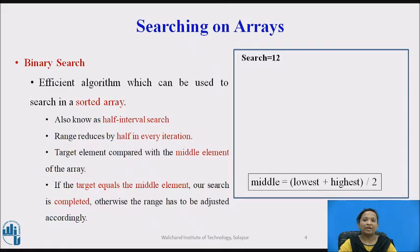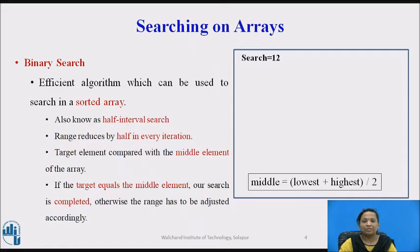The second searching algorithm is binary search. This is an efficient searching algorithm and in this approach, search is performed on a sorted list of numbers. It is also called half interval search. The range of the array will be divided into two parts at every iteration of comparison. The target element will be compared with the middle element of the array. If the target element equals the middle element, then the element is found and search is completed.